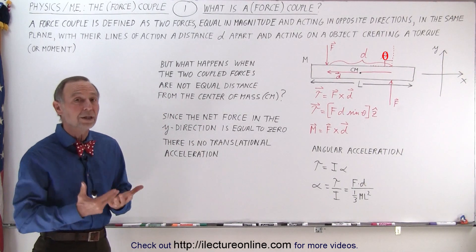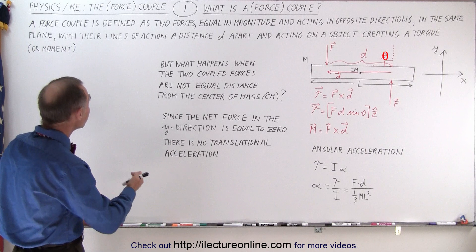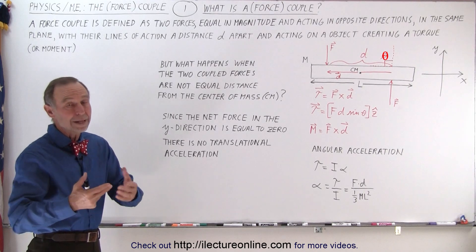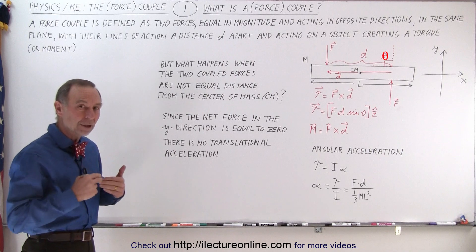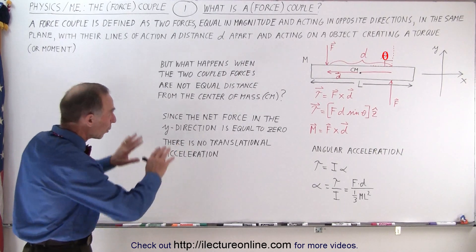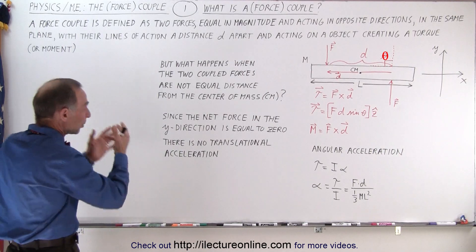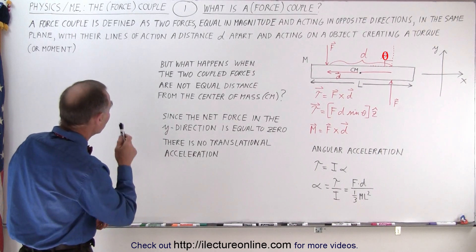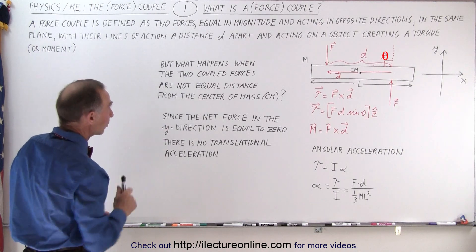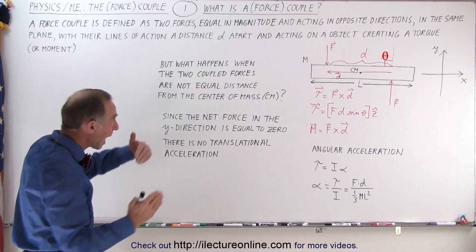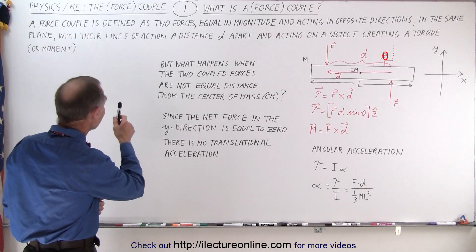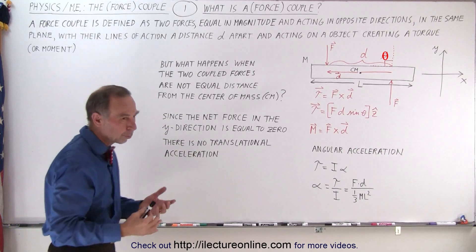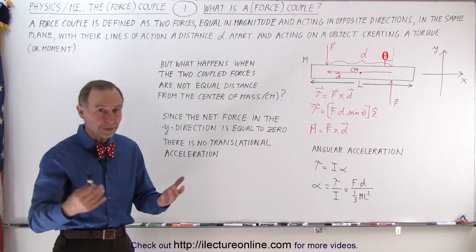Our first video simply defines what it is. When you say force couple, the shorthand of that is simply a couple. A couple means two forces acting in opposite directions, some distance apart from one another on a particular object in the same plane. A force couple is defined as two forces, equal in magnitude and acting in opposite directions in the same plane, with their lines of action a distance d apart, and acting on an object, creating a torque or moment. We use the word torque and moment interchangeably—they're essentially the same thing.